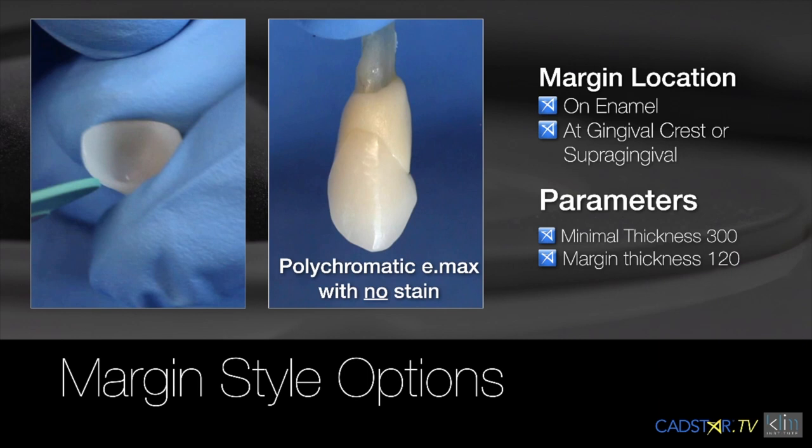You don't have to bury the margin. You can keep the margin supragingival, or even an onlay at mid-contour of that tooth. If you put a thin margin in there, you can melt that margin using a warm cement. So you have to use a brighter ceramic. But that's for another lecture.